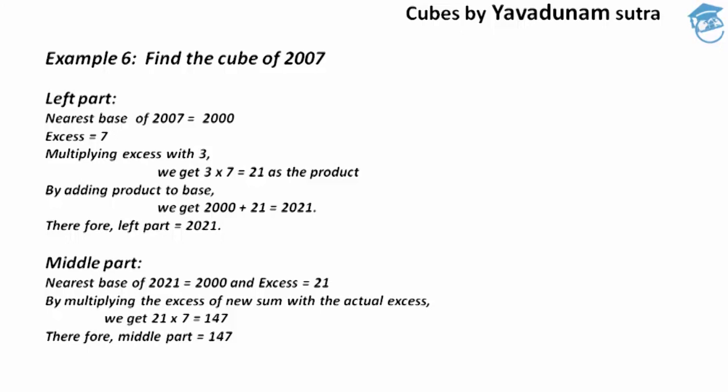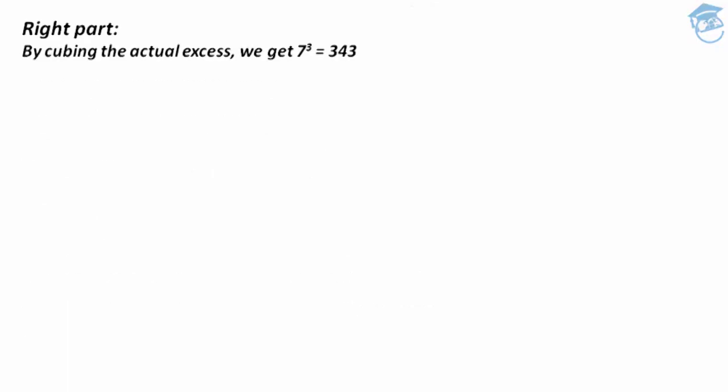After finding the middle part, moving to the next part — the right part. The first and last step here is to cube the actual excess. By cubing the actual excess, that is 7³, we get 343. Therefore 343 is regarded as the required right part.